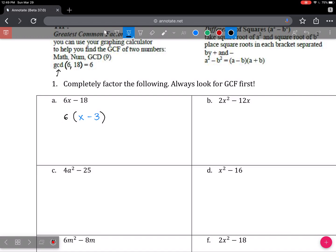For part b, the GCF actually also has a variable in part of it. When you think of the two numbers that divide 2 and 12, the biggest value that divides both is 2.